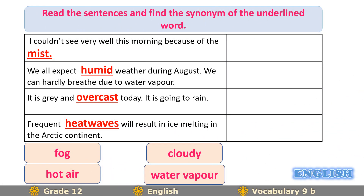Now read the sentences and find the synonym of the underlined words. We have five words: mist, humid, overcast, and heat waves. Their synonyms are: fog, hot air, cloudy, and water vapor. Please take your time, read the sentences, and try to find the synonym of each word.